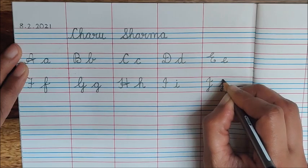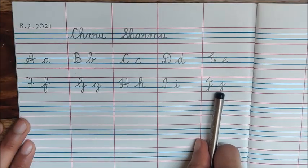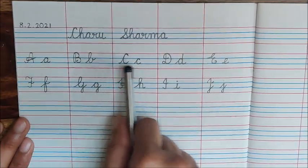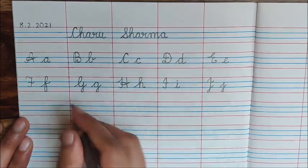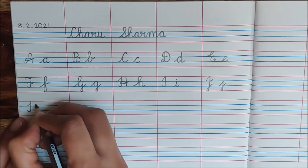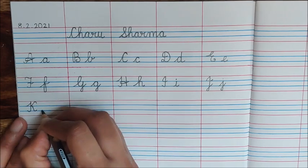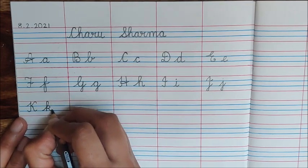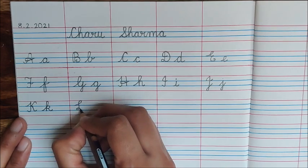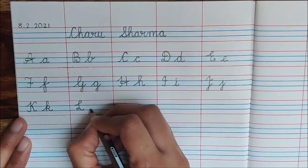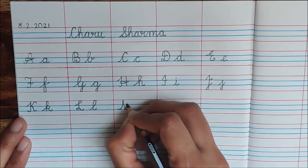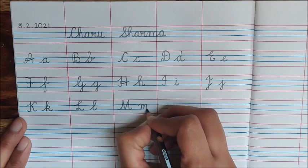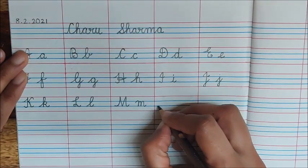Lowercase j in cursive. What comes after J children? Say and check. A, B, C, D, E, F, G, H, I, J, K. So write down here. K. L. M. N.